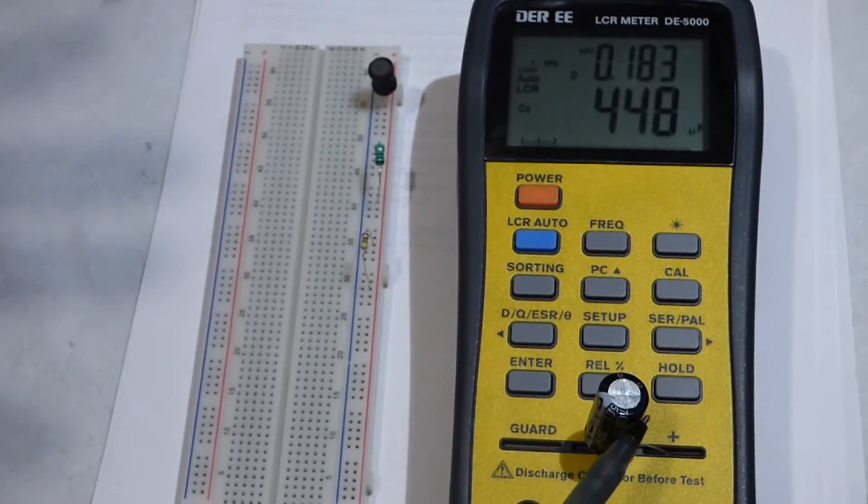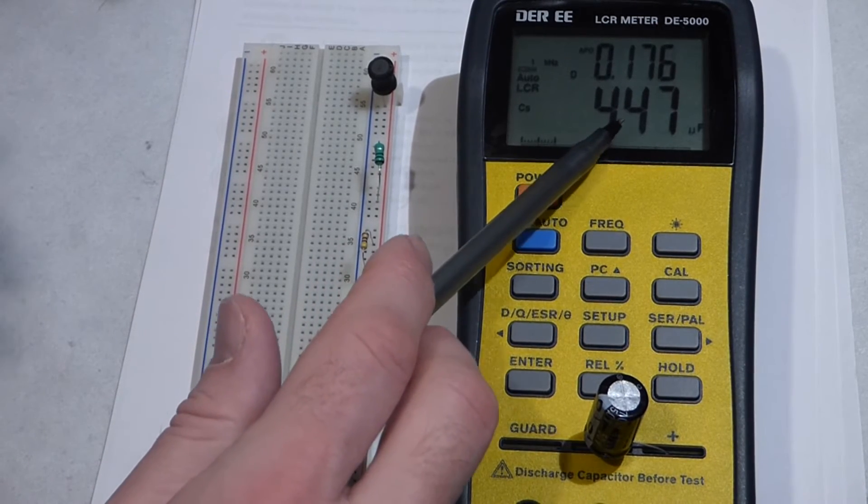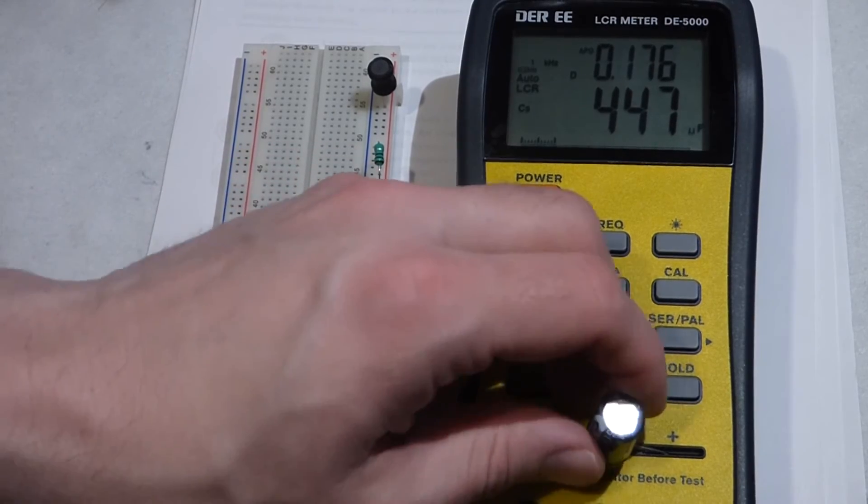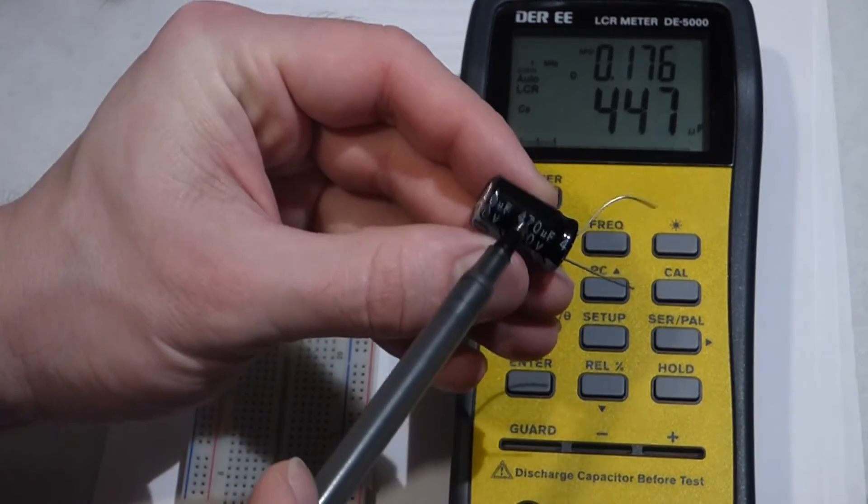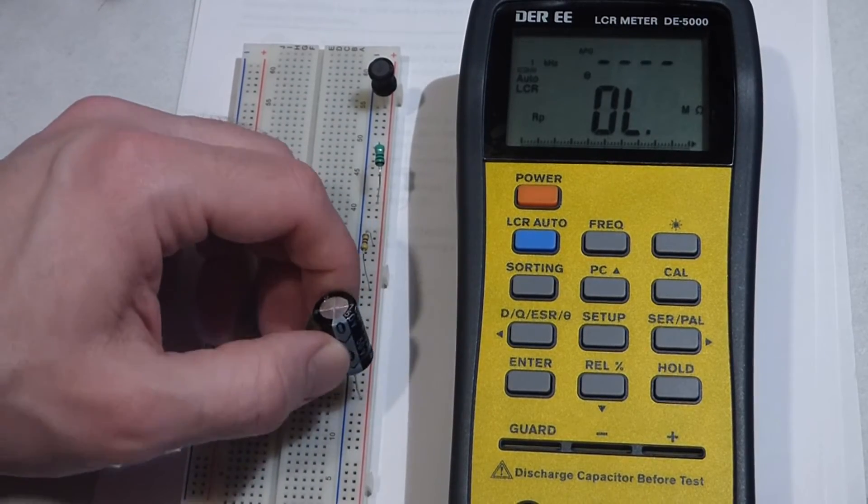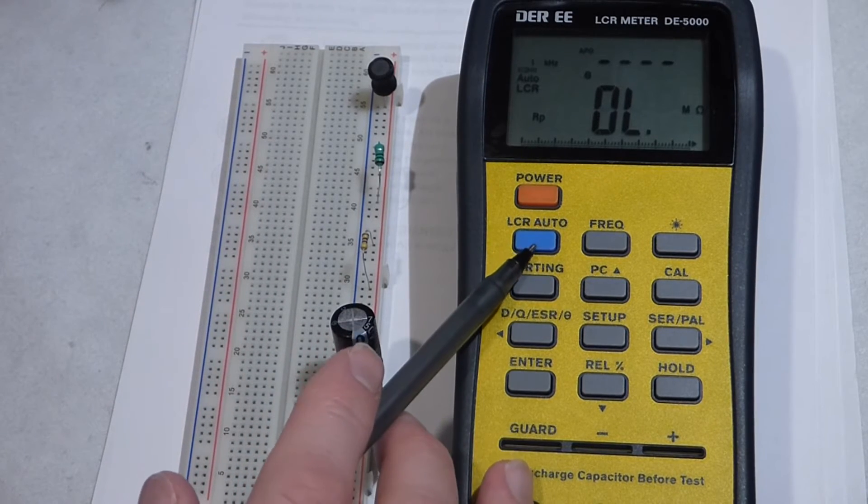Here you see we have 457 microfarad, and this capacitor is rated at 470 microfarad, so it's just slightly off but within tolerance range.